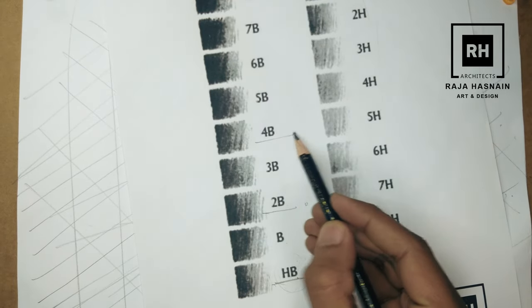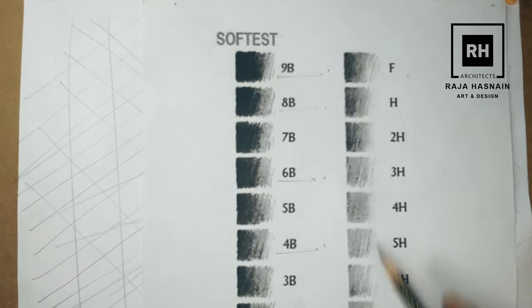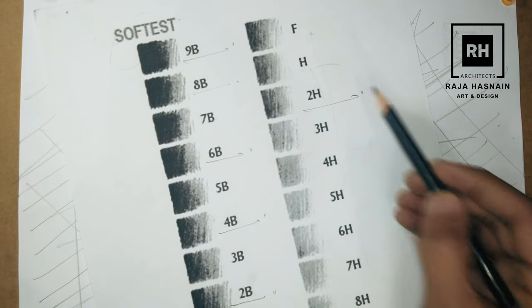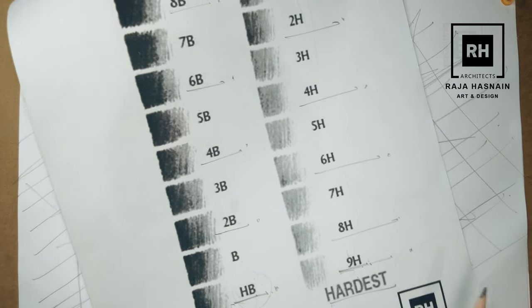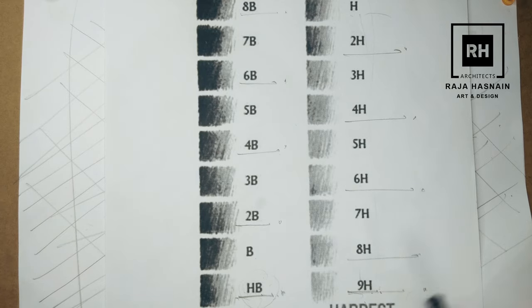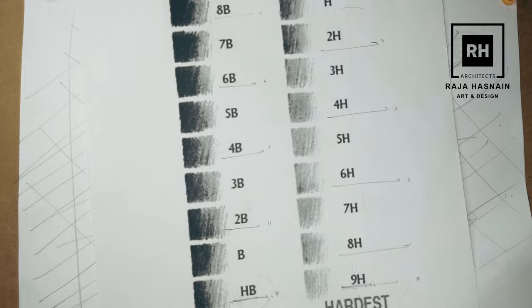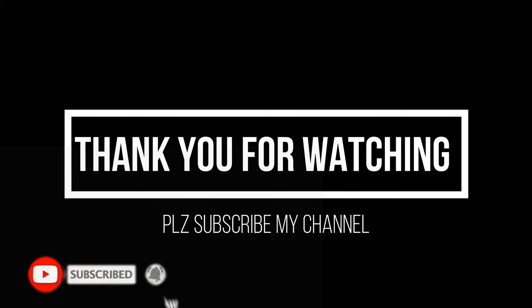2B, 4B, 6B, 8B, 9B - these pencils you can use. After that you have HB, then H series: 2H, 4H, 6H, 8H, 9H. This you can do - this basic drawing. After that, we will tell you that you can work with 3-4 pencils. So this is basic information.